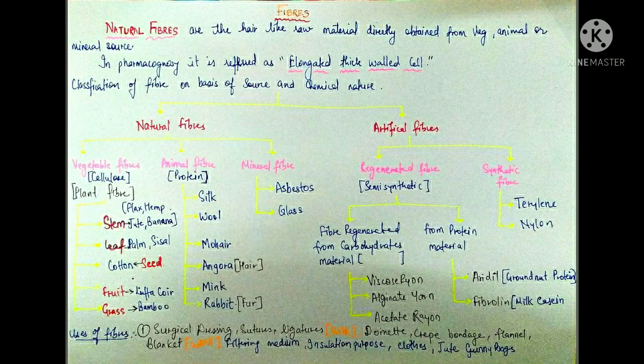So what is exactly natural fibers? Fibers may be defined as hair-like raw material directly obtained from any animal, vegetable, or mineral sources. This is called an elongated thick-walled cell in terms of pharmacognosy. Fibers can be woven into various forms. They are also convertible into non-woven fibers such as felt or paper after spinning into a yarn into a woolen cloth.